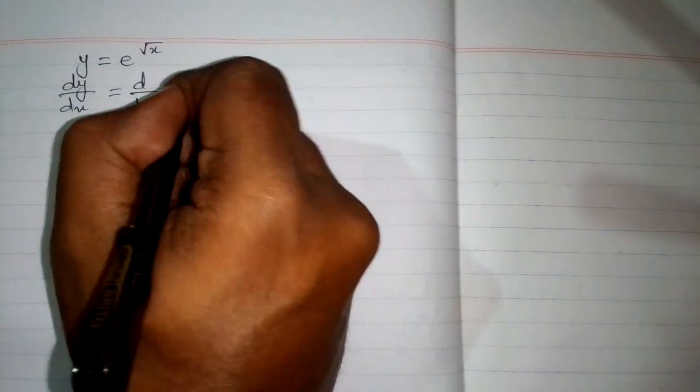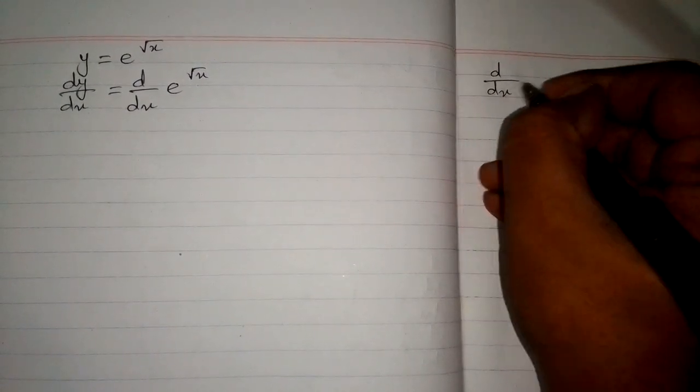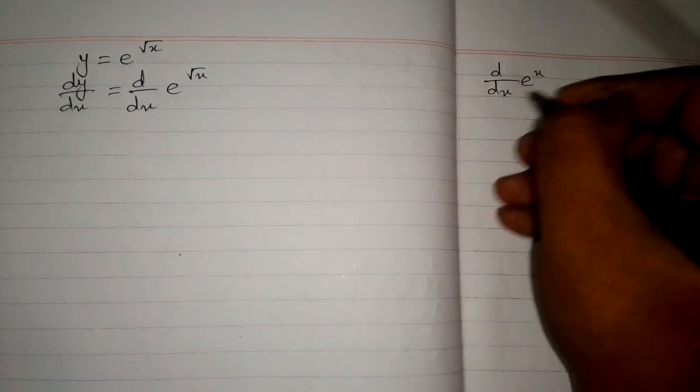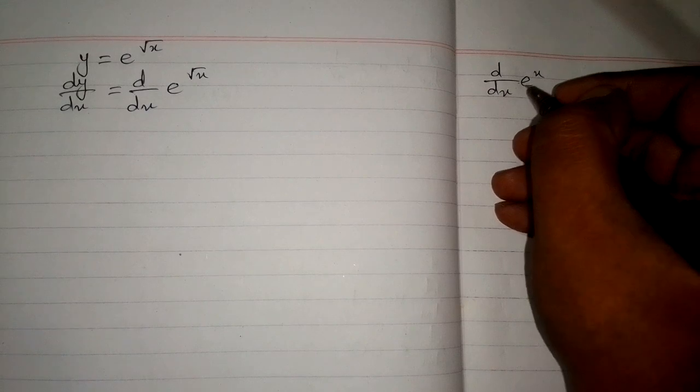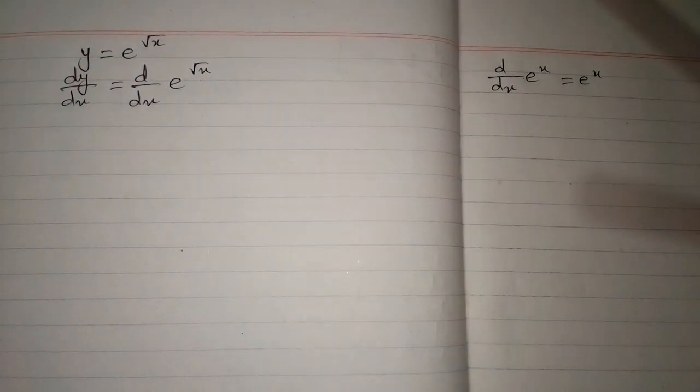In this video we will find the derivative of the function y = e to the power square root of x. Differentiating both sides with respect to x, we have dy/dx = d/dx of e to the power square root of x. We know that the derivative of e to the power x is e to the power x, where e is the exponential function.